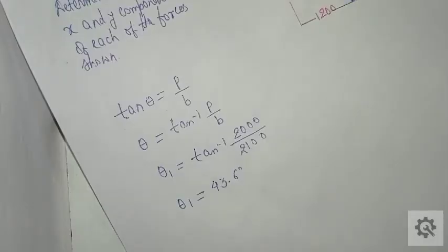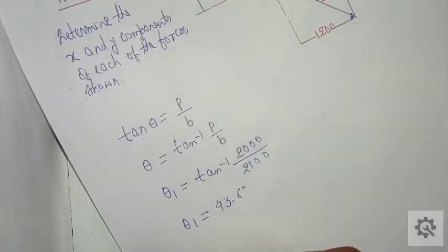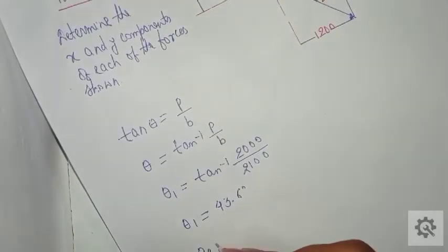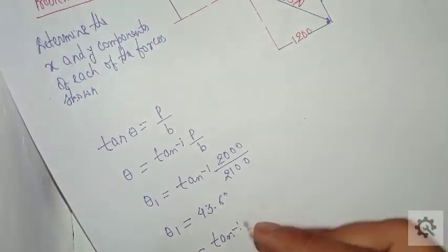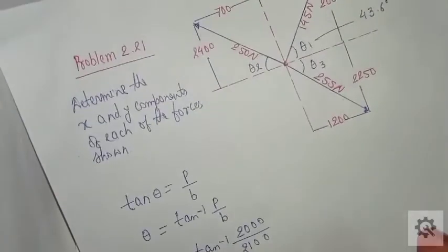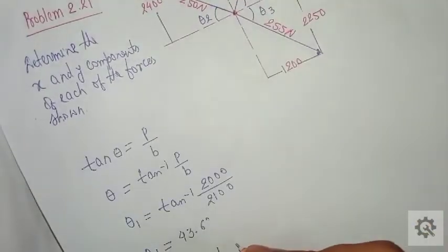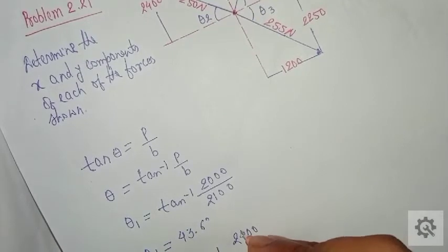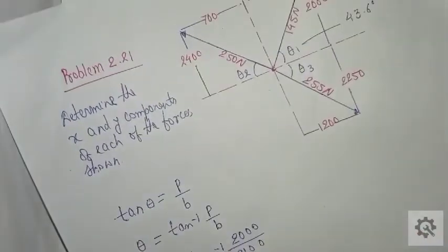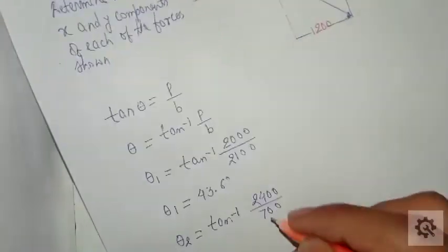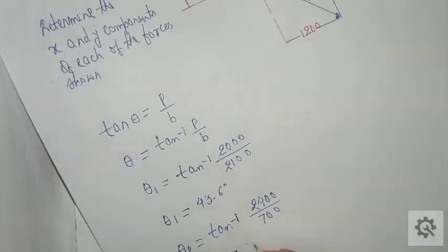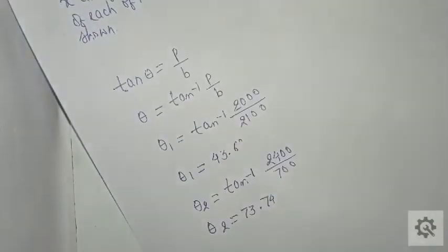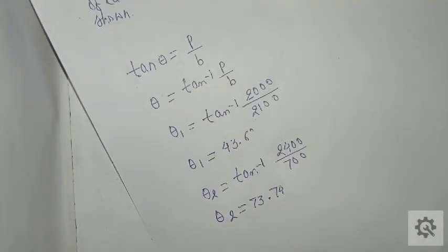Now let us find the angle for force 250 Newton. Theta two equals tan inverse of perpendicular 2400 upon base 700, so the value of theta two is 73.74 degrees.